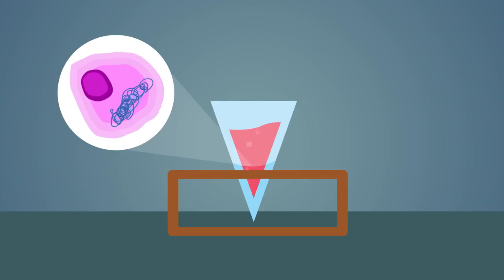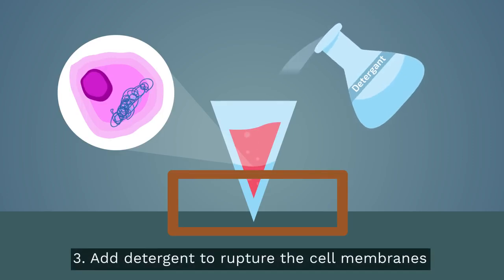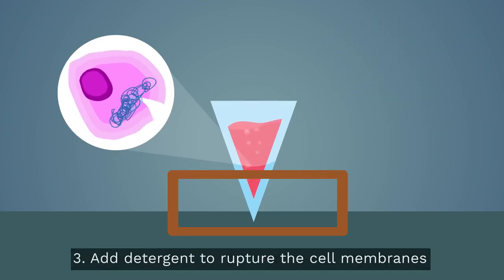To break apart the membranes surrounding the cell and the nucleus and release the DNA, you add some detergent such as washing up liquid to the soup. This ruptures the cell membranes.